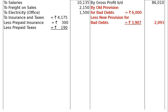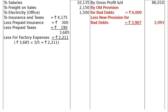Then less prepaid taxes. The prepaid insurance and prepaid taxes can be seen in adjustment number 4: prepaid insurance Rs. 300 and taxes Rs. 190. After deducting these we get Rs. 3,685. Less for factory (3/5) Rs. 2,211, and the office portion (2/5) shown in the final column is Rs. 1,474.